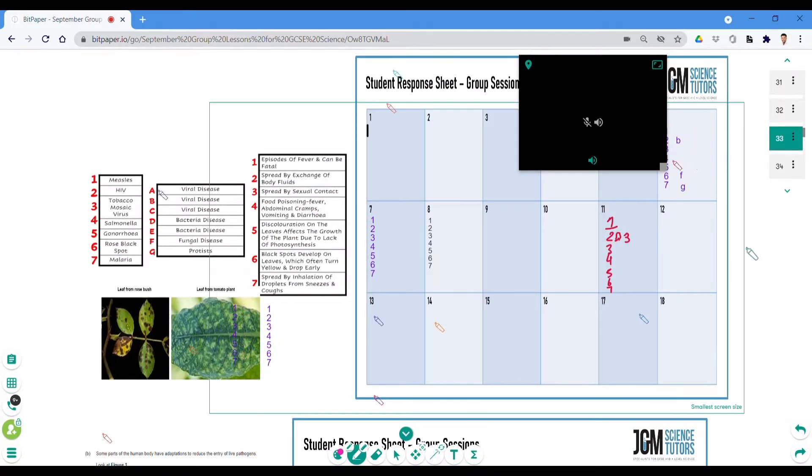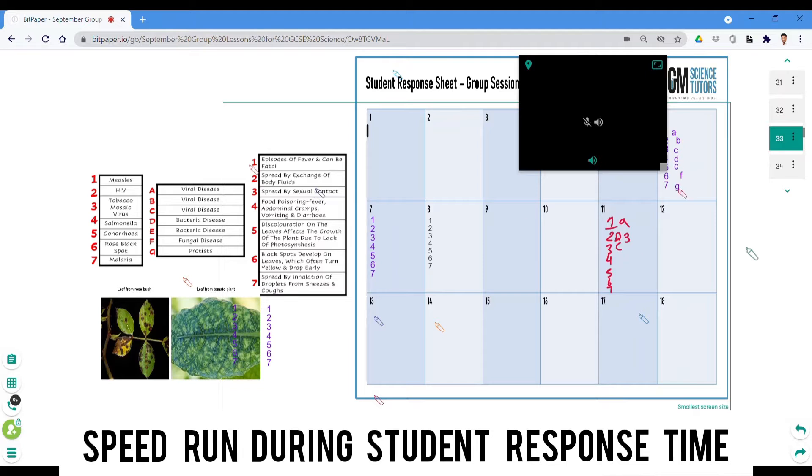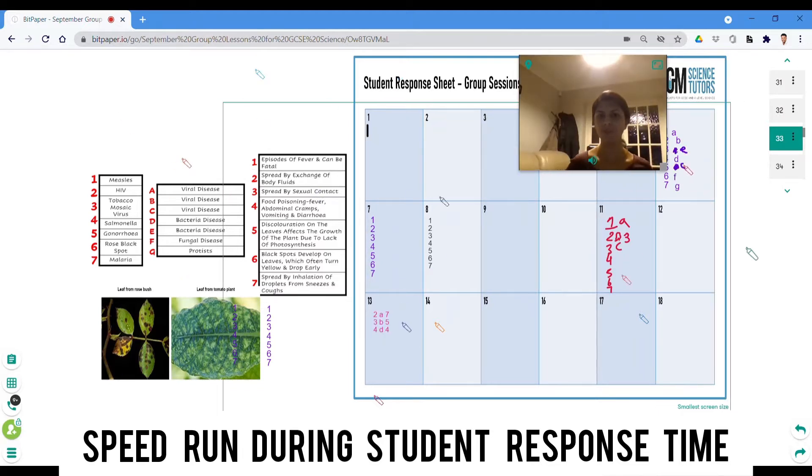This next shot shows a speed run of what exactly it looks like when students are answering questions. Each student has their own rectangle to write their answers in.